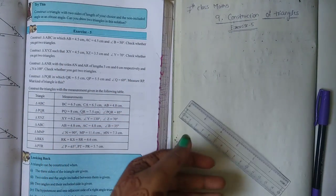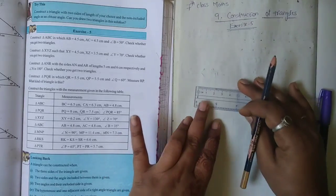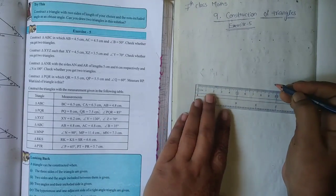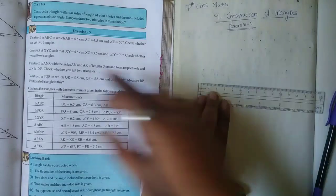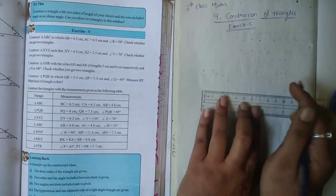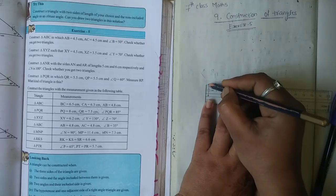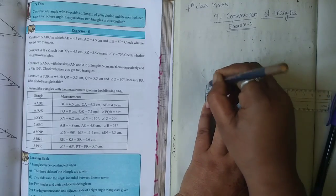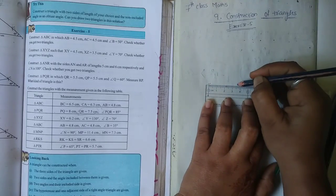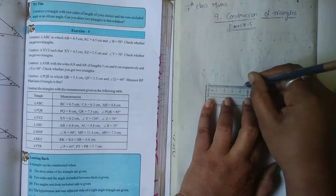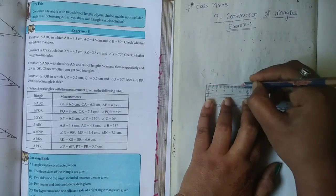First, we will draw one side. AB is 4.5 cm. Mark 0 at one dot point, then mark 4.5 at another dot point, and draw the line AB.